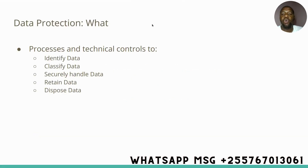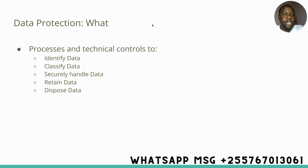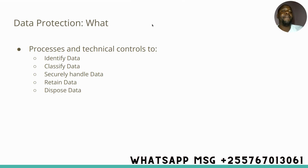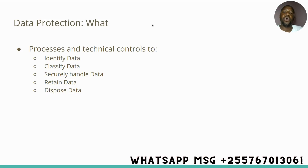What is data protection as a control for cybersecurity? This entails process and mechanism — it is a two-sided coin. One side is concerned with procedures, guidelines, and policies about data. The other side is concerned with the mechanical and technical things you have to do on your assets and infrastructure. Both of these are concerned with identifying data, classifying data, handling data, managing data retention, and disposing of data.